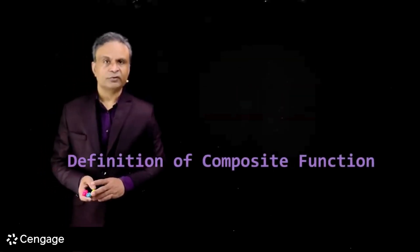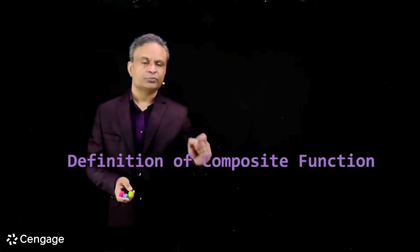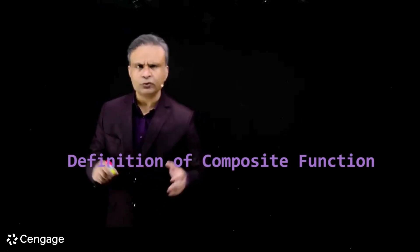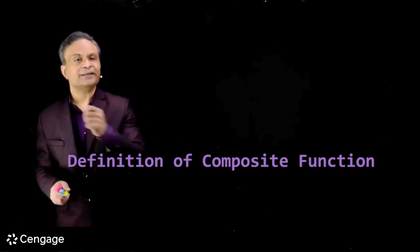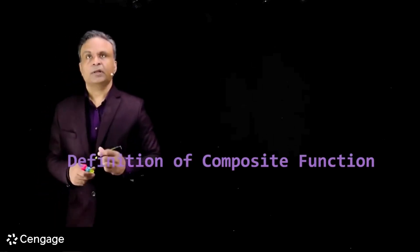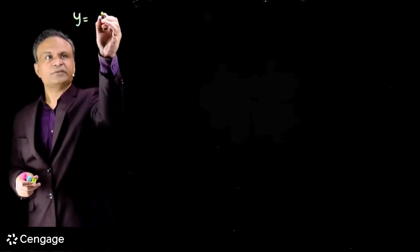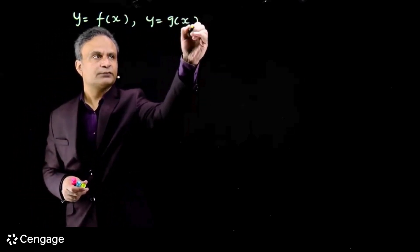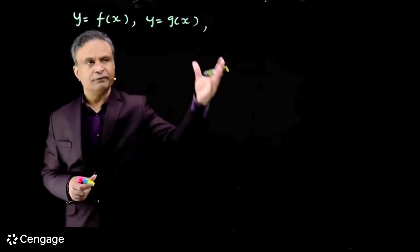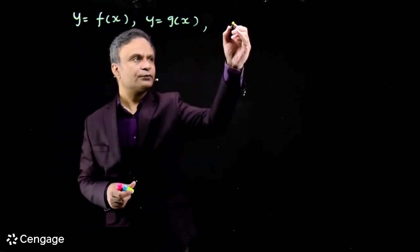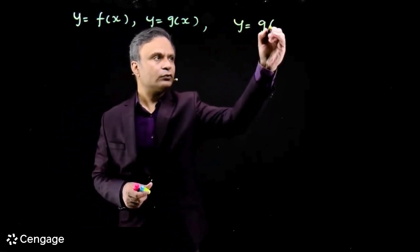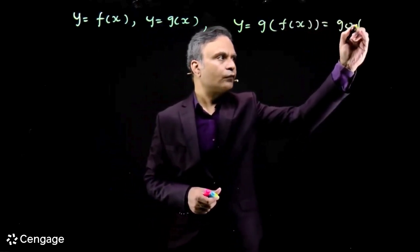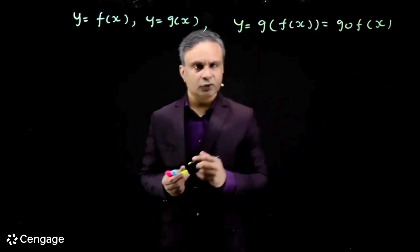Hello students. In this video we will understand how a composite function is defined and what will be its domain and range with respect to the domain and range of participating functions. We have participating functions y = f(x) and y = g(x), and we define their composite function y = g(f(x)), written as goff.